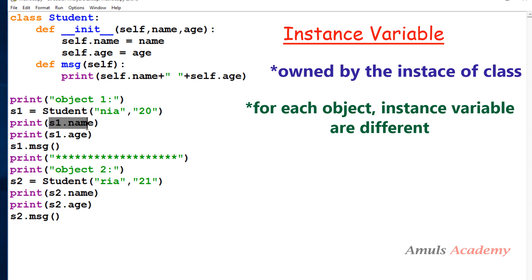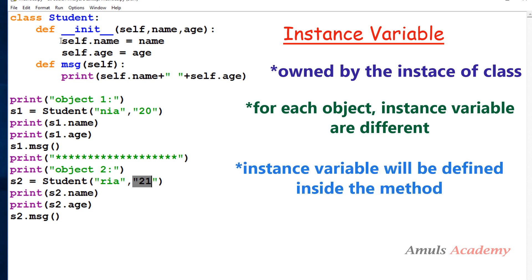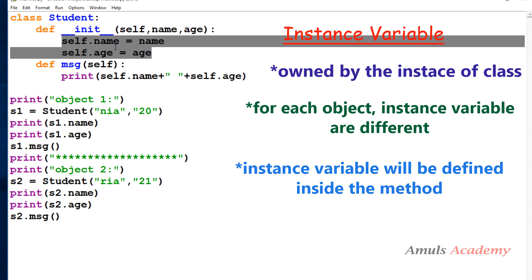For each object the instance variables are different. For example, s1.name is 'Nia' and s1.age is 20, while for s2 name is 'Ria' and age is 21 — the name and age are different for different objects. That's why these are called instance variables, and we define them inside the method.